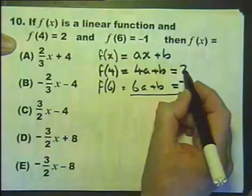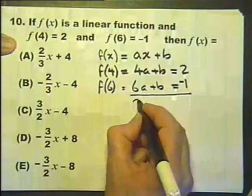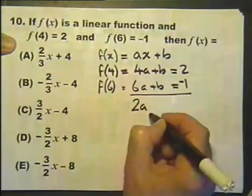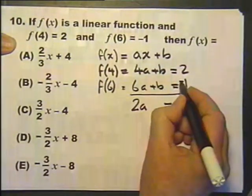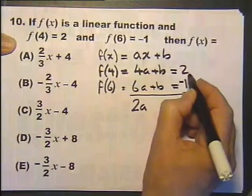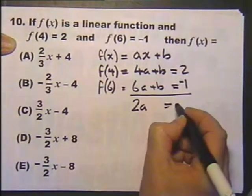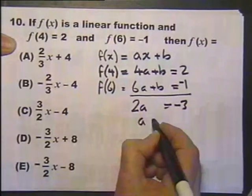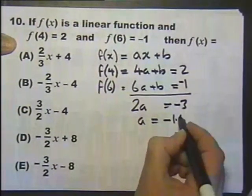Let's subtract the equations. 6a minus 4a is 2a. b minus b cancels. -1 minus 2 is -3. So a itself is -1.5 or -3/2.